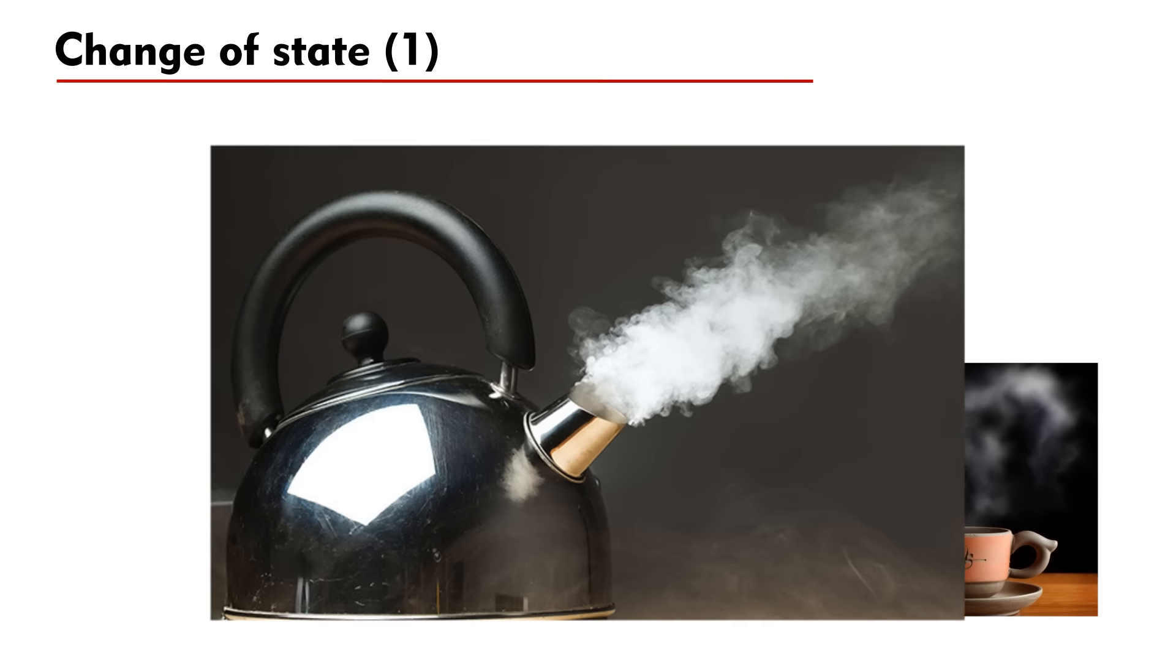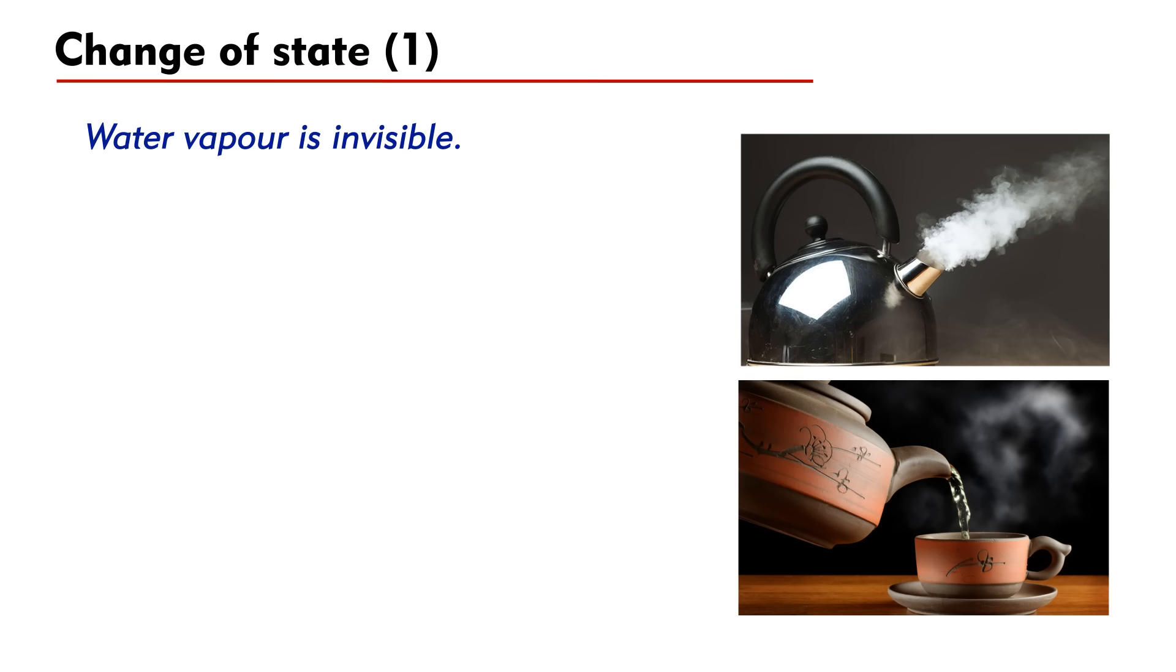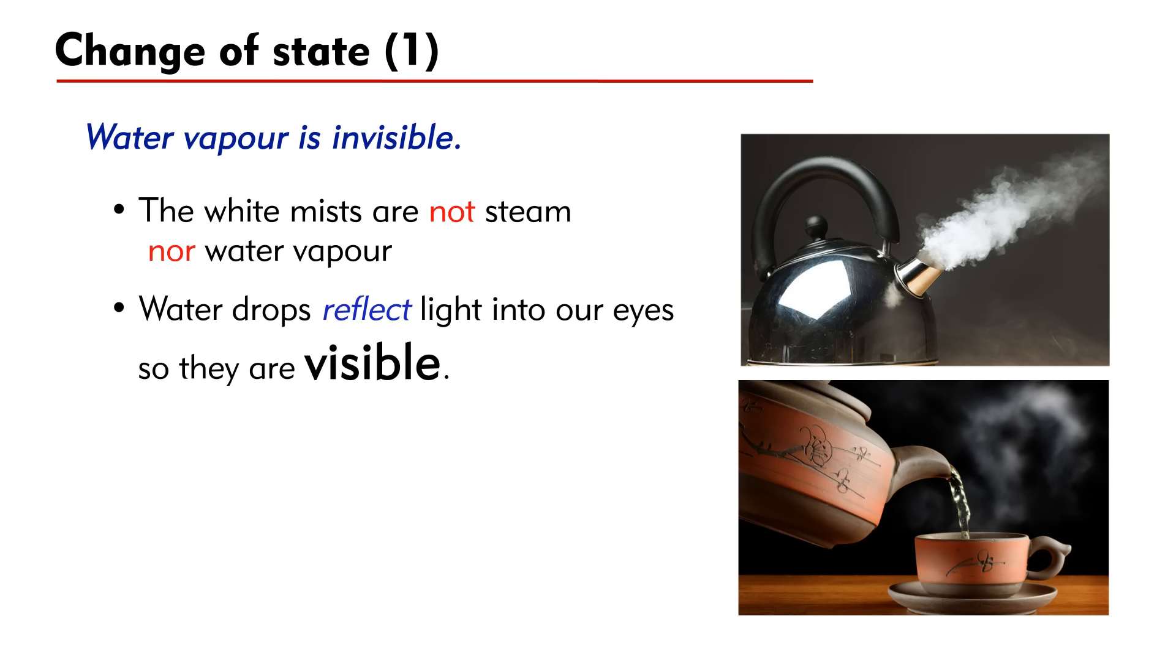It is important to note that water vapor is invisible. We must learn to interpret this diagram correctly. The white mists that appear above the boiling water and the hot drink are not steam nor water vapor, because they are invisible. What is visible to us is the small water drops that reflect light into our eyes. Water vapor and steam do not reflect light, so they are invisible.